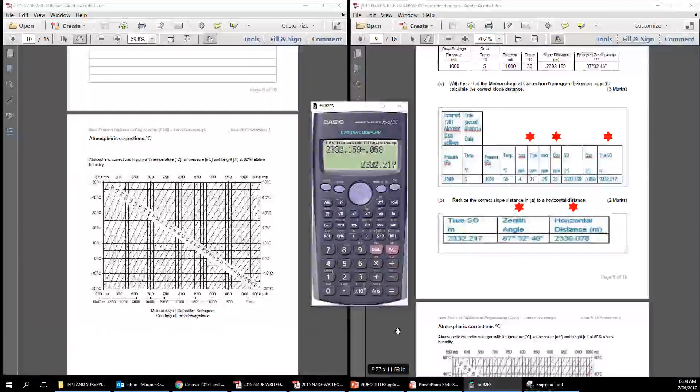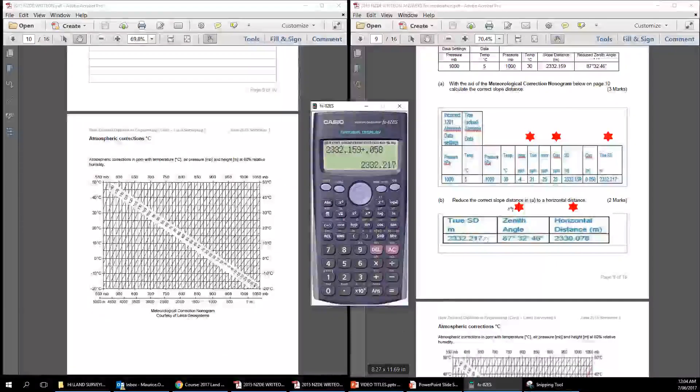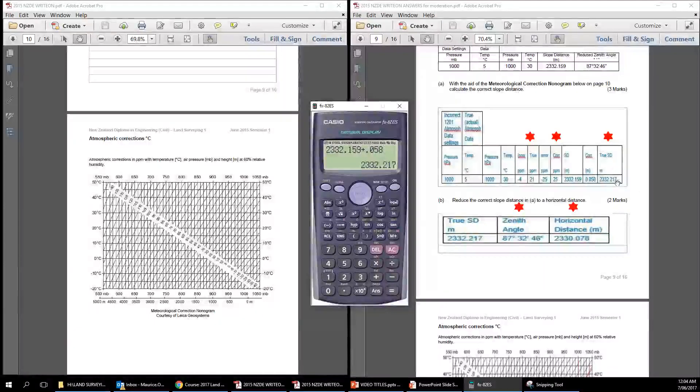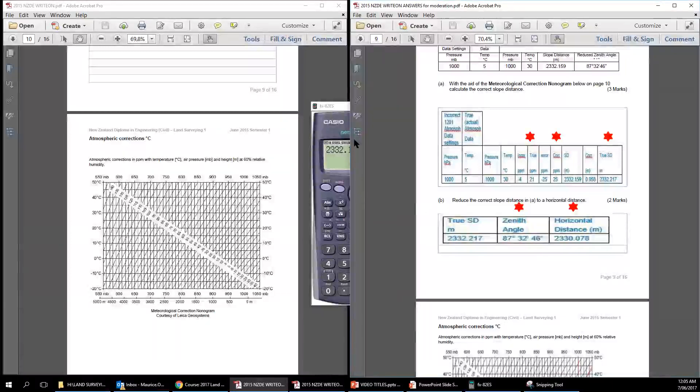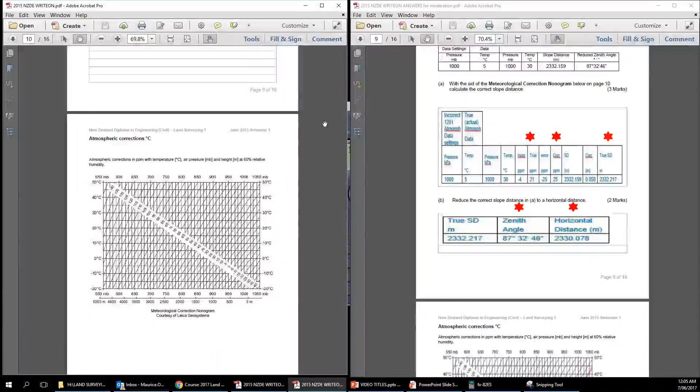All right, so 25 parts per million is 25 millimeters per kilometer. So that's 0.058, so then we get 2332.159 plus 0.058 equals 2332.217. And that gives us the true slope distance. That's what the correct slope distance is. So that's all well and good there. Okay, the true slope distance, 2332.217. And now in part B, of course, we need our little calculator here.